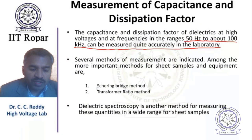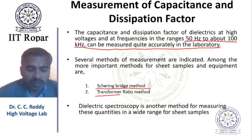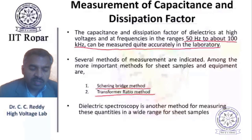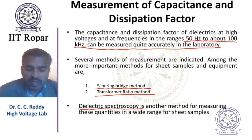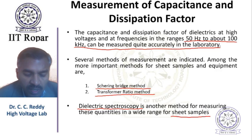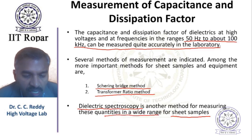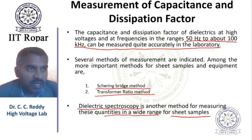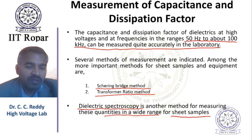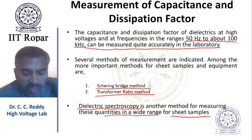Among the available methods, these two are the main ones: the Schering bridge method and the transformer ratio arm method. Apart from these, we have dielectric spectroscopy, which can measure sheet samples in a wide range of frequencies. The capacitance, tan delta, real and imaginary parts of permittivity, and conductivity can all be measured using dielectric spectroscopy.